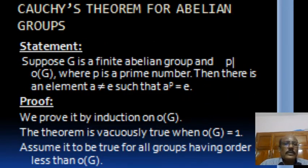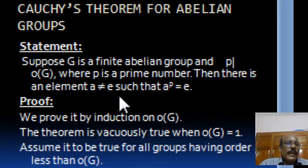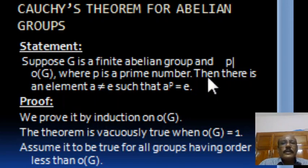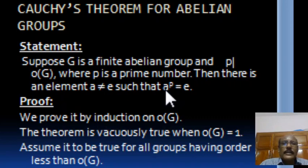Using these results, let us prove Cauchy's theorem for abelian groups. The statement is: suppose G is a finite abelian group and P divides order of G, where P is a prime number, then there is an element A not equal to E such that A power P equals E. For example, if 7 divides order of G, you can find an element A other than E such that A power 7 equals E. Suppose 11 divides order of G; then you can find an element A other than E such that A power 11 equals E.